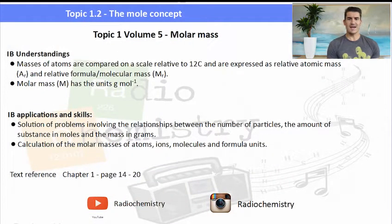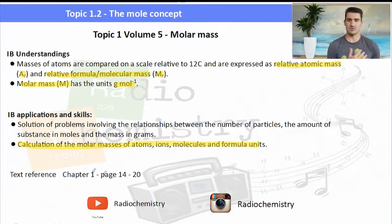IB understandings. Masses of atoms are compared on a scale relative to carbon-12 and are expressed as relative atomic mass (AR) and relative formula mass or molar mass (MR). Molar mass (capital M) has the units g mol⁻¹. I'll probably call it MM because of molar mass. The text reference is page 14 to 20. Check it out.